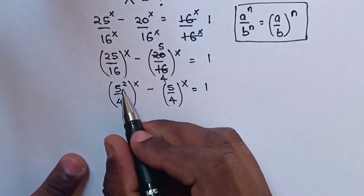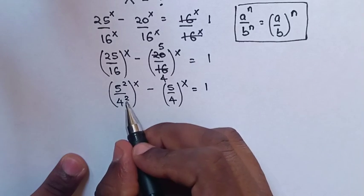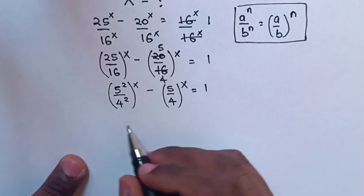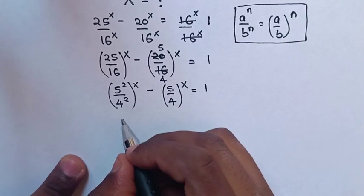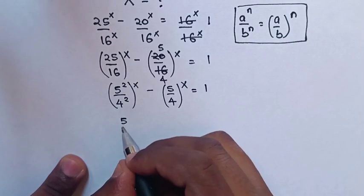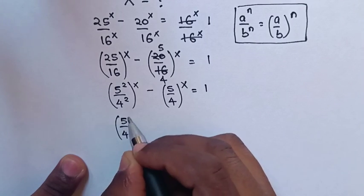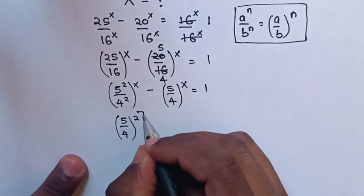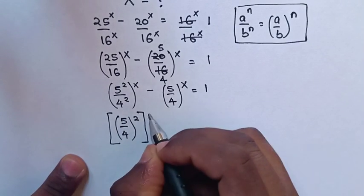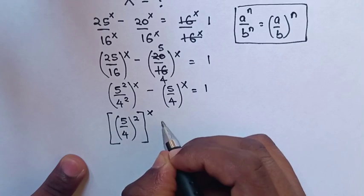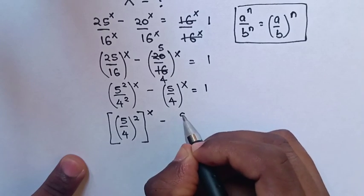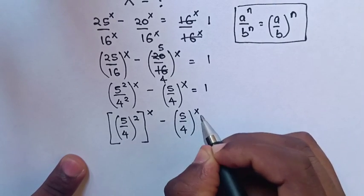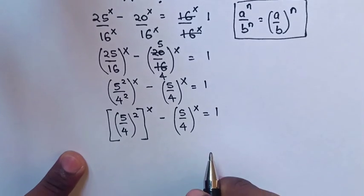Then again here we can see a common power of 2. We will apply the same rule, so it will be (5 over 4) bracket power 2 bracket power x minus (5 over 4) bracket power x is equal to 1.